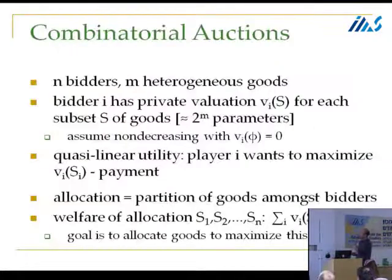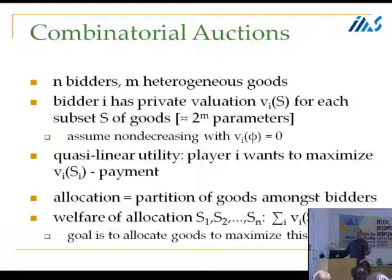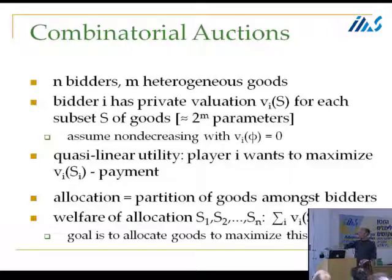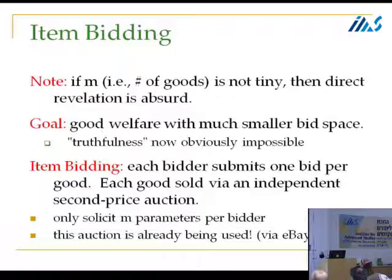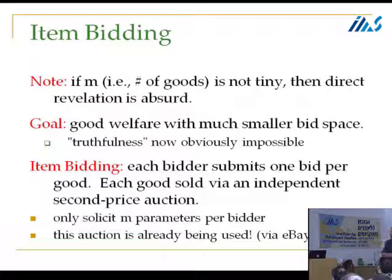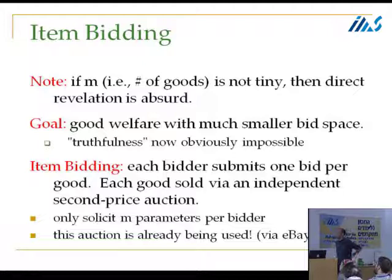Combinatorial auctions: N heterogeneous goods, N players, every player has a private valuation for each subset S of goods — 2^M private parameters per player in general — and we're interested in welfare maximization. You could use the VCG mechanism, but direct revelation would require 2^M parameters from each bidder. We're going to ask for only M: each bidder independently places a bid on each of the M items, which are then allocated using a Vickrey auction on each item. Goods on which you're the highest bidder are allocated to you, and you pay the sum of second-highest bids on those goods. This is what we call item bidding.